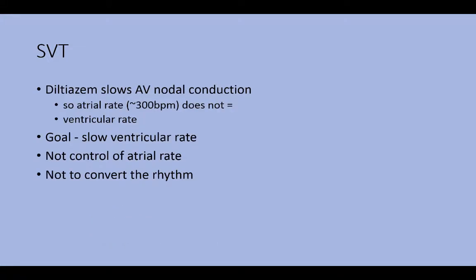Diltiazem slows AV nodal conduction so that the atrial rate — which can be 300, 400, or 500 beats per minute — does not equal the ventricular rate. This gives time for the ventricle to fill and perfuse the body. The goal again is slowing the ventricular rate, not controlling the atrial rate.